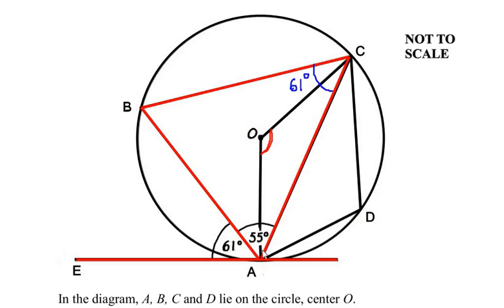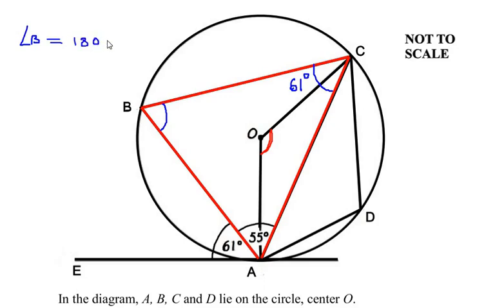Once we have found angle BCA, we consider triangle ABC. The sum of all angles in a triangle equals 180 degrees, so we can find angle B by subtracting 55 degrees and 61 degrees from 180 degrees. So angle B equals 180 minus 61 minus 55, which gives us 64 degrees.